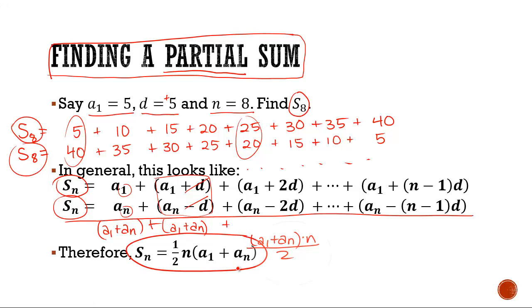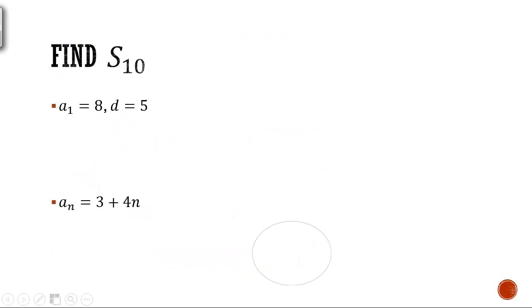And so, that gives us the formula half n times a₁ plus aₙ. Now that we know that Sₙ is half n times a₁ plus aₙ, we can now find various sums.